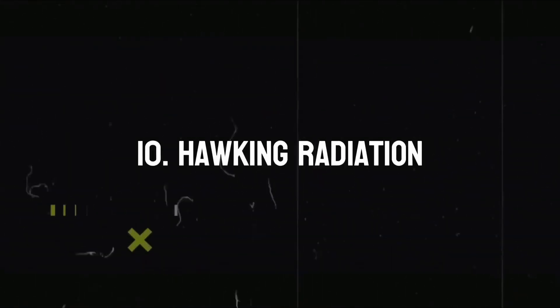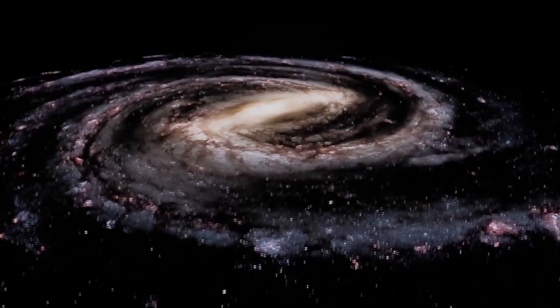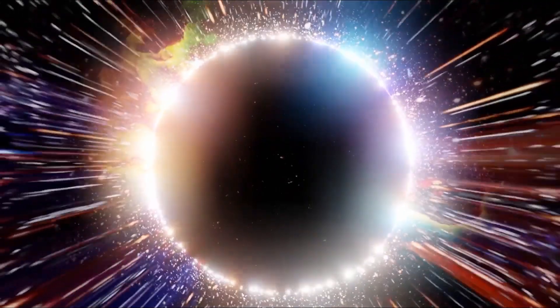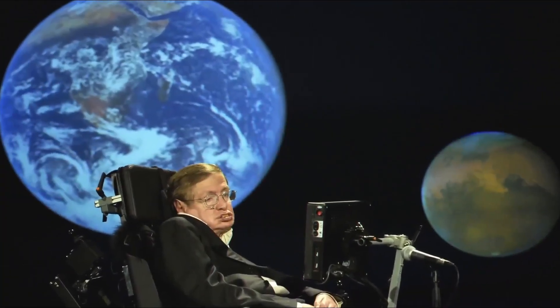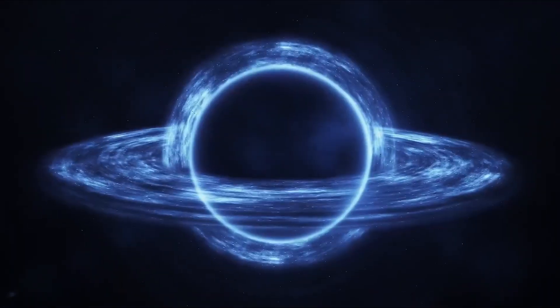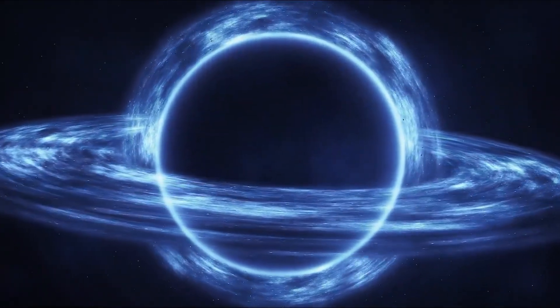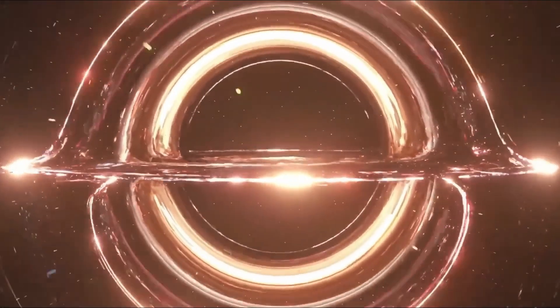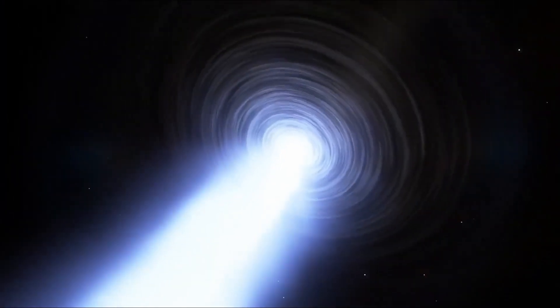Hawking radiation. Black holes might not be bottomless pits after all. Some energy might be able to escape them. This surprising discovery was first predicted by Stephen Hawking in 1974. The phenomenon is called Hawking radiation, after the famous physicist. Hawking radiation disperses a black hole's mass into space, and over time will actually do this until there is nothing left, essentially killing the black hole. This is why Hawking radiation is also known as black hole evaporation.